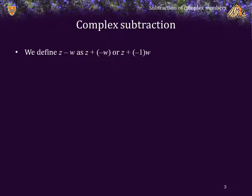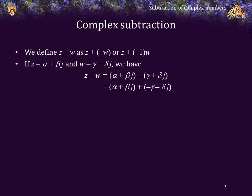We define z minus w as simply z plus the additive inverse of w, or alternatively z plus negative 1 times w. Thus, if z equals α + βj and w equals γ + δj, then z minus w is the expression on the right-hand side. We can bring the minus sign into the right-hand side, and now we are summing these two complex numbers. We sum the real and imaginary components to get the result.